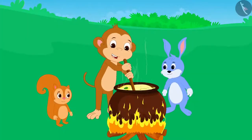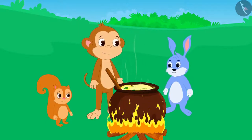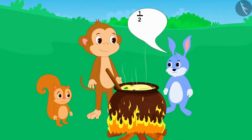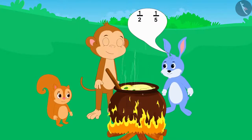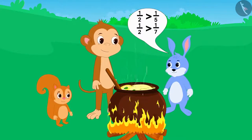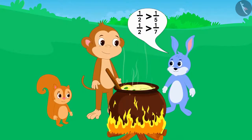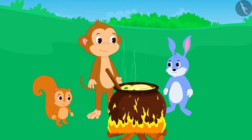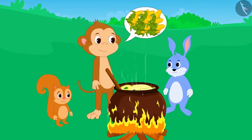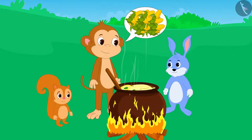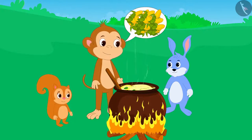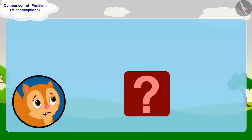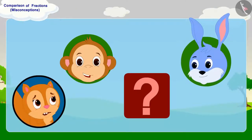Now when it came to distributing the dish, Banni said that because half is more than one-fifth and one-seventh, he should get half of that dish. But Babban is saying that he has given the most vegetables, therefore he should get the largest part of the dish. Children, who do you think is right — Babban or Banni?